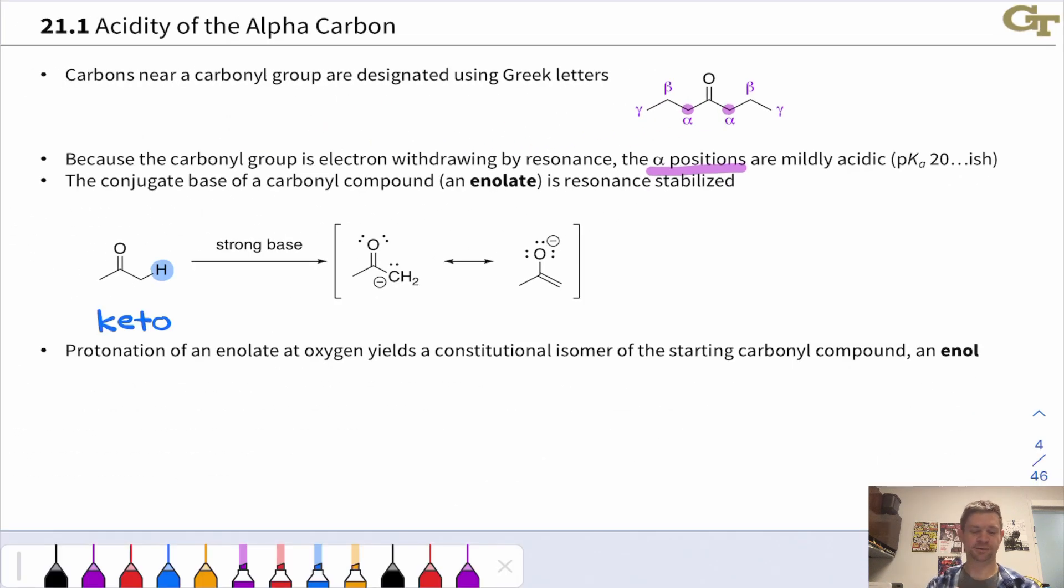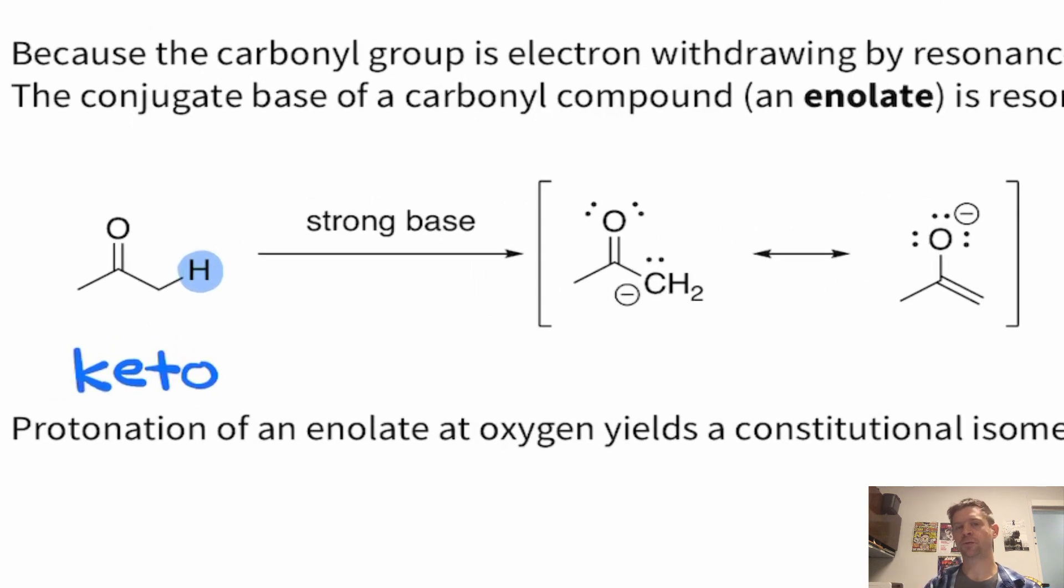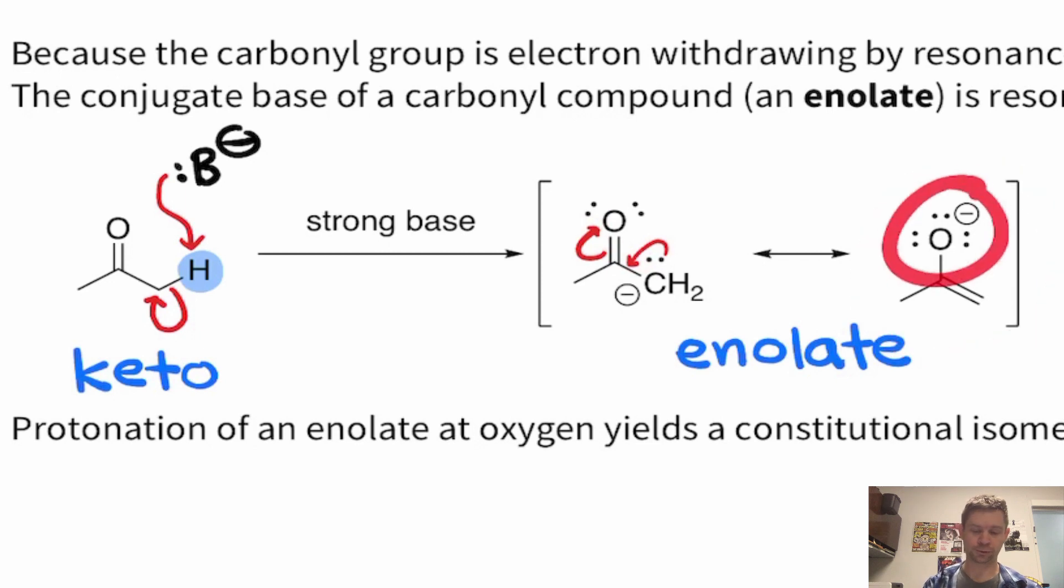We'll see in the very near future that carbonyl compounds have an isomeric form known as an enol. So we're going to start referring to the form of the carbonyl compound that we're used to with the CO double bond as the keto form. When we deprotonate at the alpha position of the keto form, this places negative charge at the alpha carbon. And the resulting intermediate is an enolate. Now, the enolate is resonance stabilized. We can push electrons like this. And the beauty of this alternative resonance form is, well, first of all, it puts negative charge on the oxygen. That's great.